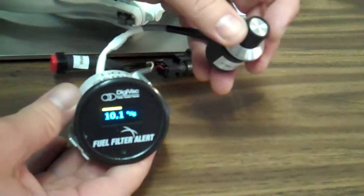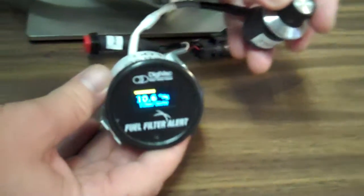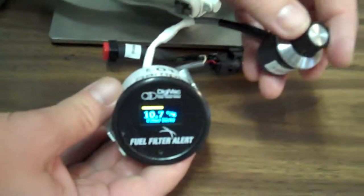Once we get to the critical pressure here at 10 inches of mercury, we see that the filter is dirty. It will say that and beep.